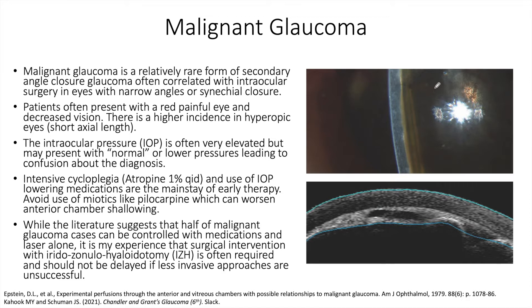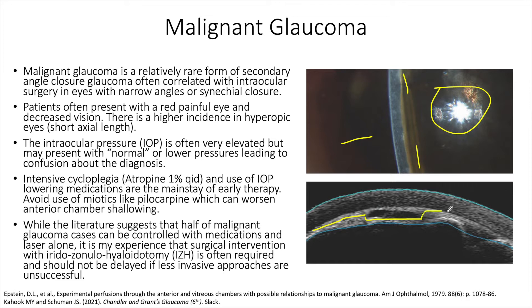You can see on exam here an edematous cornea along with a very shallow central anterior chamber and movement of both the iris and the lens anteriorly to touch the cornea. This can also be seen with ultrasound biomicroscopy, where both the iris and the lens are positioned anteriorly and in many places touching the cornea.